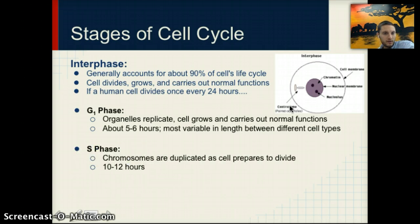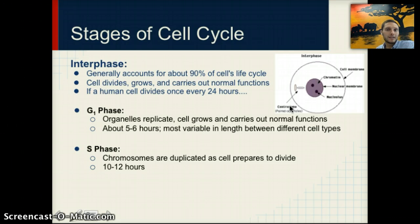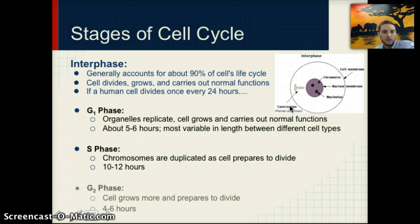The second step of interphase is S phase, when the DNA is duplicated to prepare the cell to divide. This takes about 10 to 12 hours — almost half of the cell's overall life cycle. The last step of interphase is G2 phase, where the cell grows a little more and prepares to divide; this takes about four to six hours. These three parts — G1, S, and G2 — make up interphase.